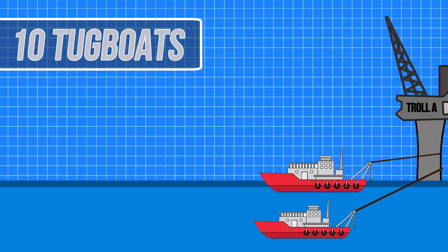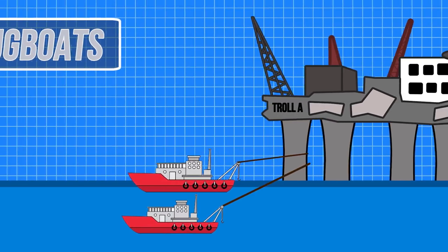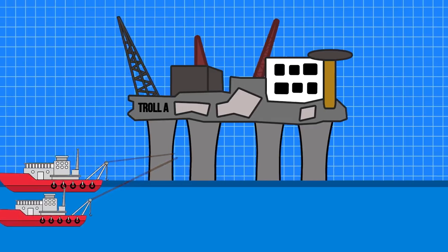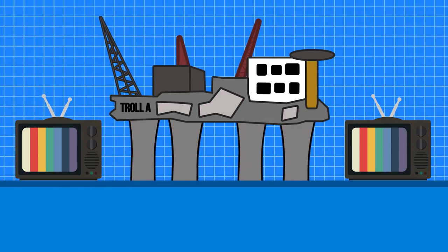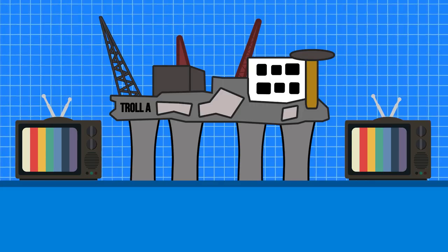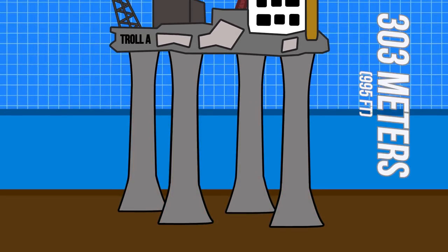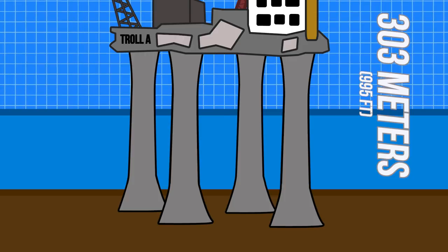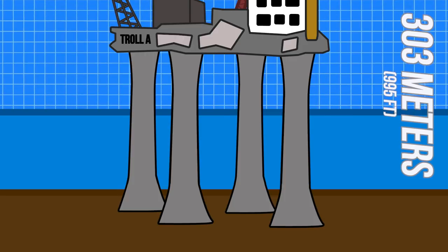This ultimately resulted in 10 tugboats pulling the structure over water on this 174 mile journey. The trek itself was a televised sensation in 1996 when it was towed into the North Sea. The platform now stands on the seafloor 303 meters below the water's surface on massive foundational legs.